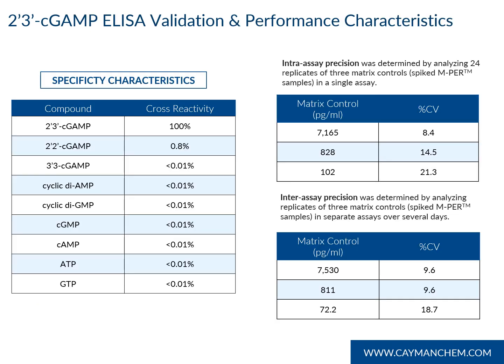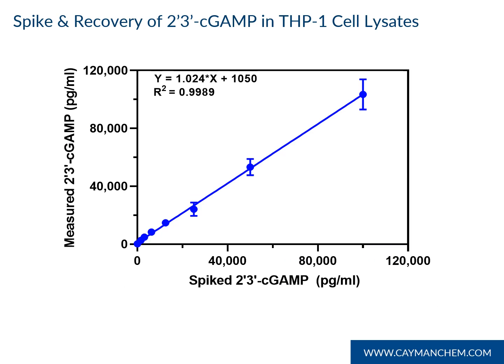2-3 cGAMP ELISA validation and performance characteristics. Specificity testing was excellent, with only 2'2' cGAMP, a synthetic analog, showing any cross-reactivity. Intra- and inter-assay precision was performed at high, medium, and low levels in EMPER, and the corresponding CVs are shown. In spike and recovery experiments, THP-1 cell lysates were spiked with 2-3 cGAMP and quantified using the ELISA. A slope near 1 and good R-squared indicate good recovery and consistency over a wide dynamic range. The error bars represent standard deviations from multiple dilutions of each sample.